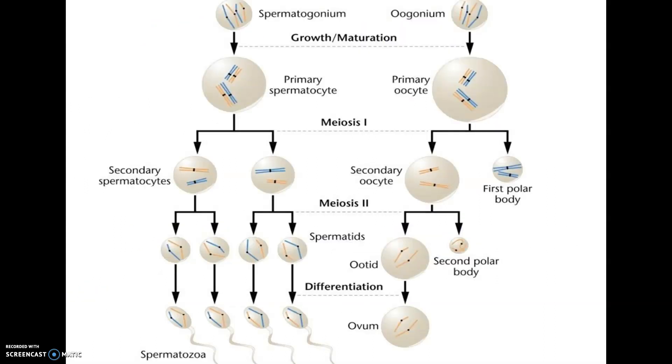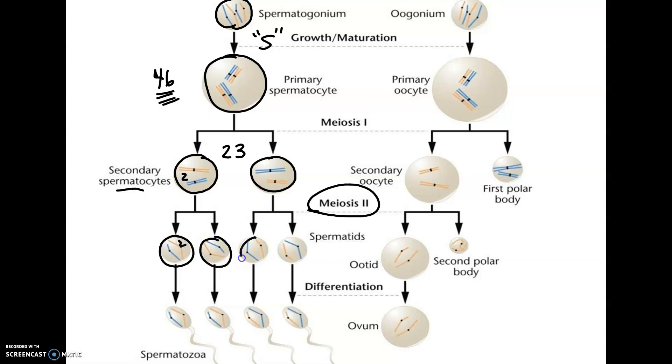So here is spermatogenesis. So this is your pre-sperm cell. It goes through S. And here's our – now, they're only showing four chromosomes. Obviously, if this was making a sperm, we would actually start with 46. This is meiosis 1, and in reality, it would go from 46 to 23. These are called spermatocytes. And then meiosis 2 happens, and the number doesn't change. It would stay 23. And then each of these matures into a spermatozoa.